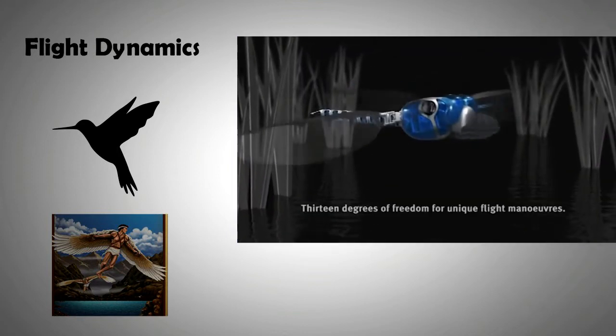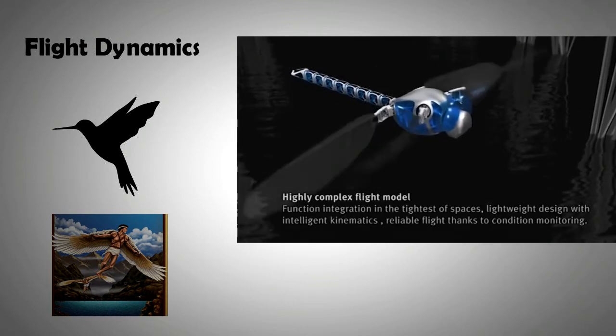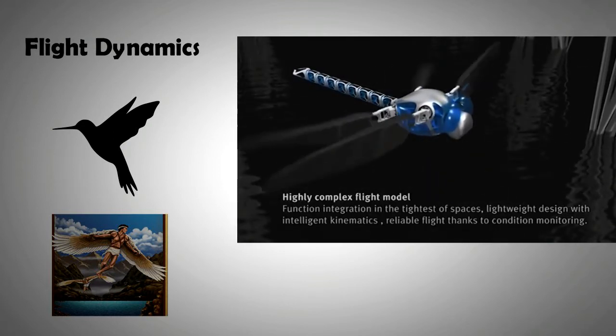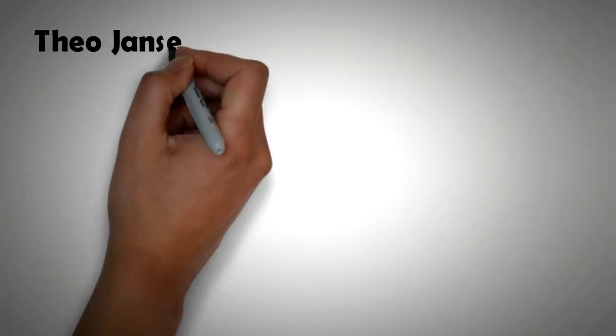In the future, mechanized rotary motion and reciprocatory motion in machines could be replaced by a more fluid and animalistic motion. And one man that has a huge role in that transition is the Dutch designer Theo Jansen.